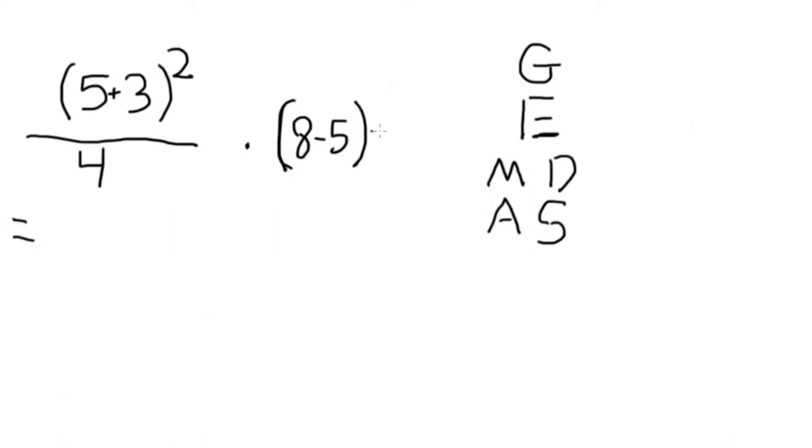First, simplify the problem inside of the grouping symbols. In the numerator, quantity 5 plus 3 squared equals 8 squared and quantity 8 minus 5 equals 3.